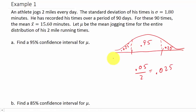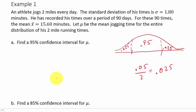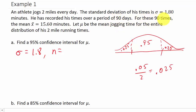We know E equals Z sub C times sigma divided by the square root of N. We know sigma is 1.8 and N is 90, since there are 90 recorded times. Now we need to find Z sub C.